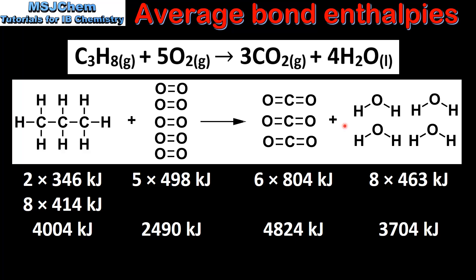And finally, the water. In the balanced chemical equation we have 4 moles of water. One molecule of water is composed of 2 oxygen-to-hydrogen single bonds, giving a total of 8 O–H single bonds. So we multiply the average bond enthalpy for the O–H bond by 8, which gives 3704 kJ.